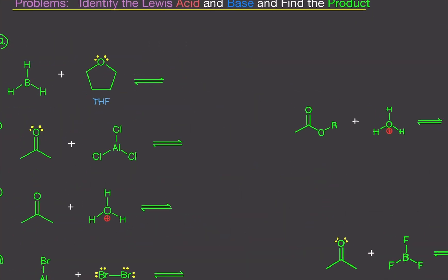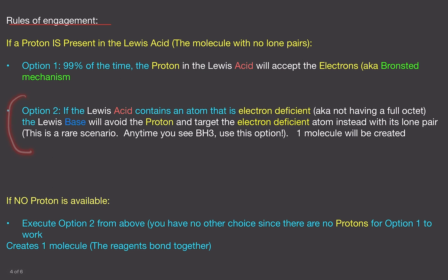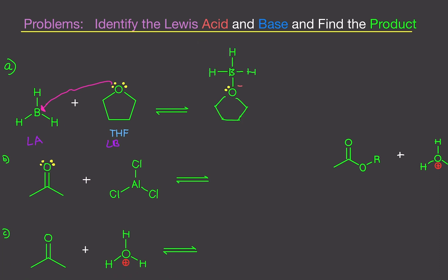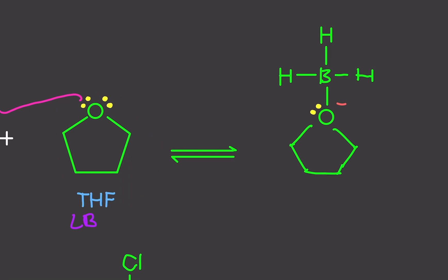Let's do some practice problems. I purposely did the BH3 one here first. Notice we have BH3, so we're going to use the rare option two: the base will avoid the proton and target the electron-deficient atom with its lone pairs, and one molecule will be created. This is the Lewis acid; this is the Lewis base because it has the electrons. The electrons are going to avoid the proton and target the boron. When this happens, we create one merged molecule — boron now has an extra bond with THF.